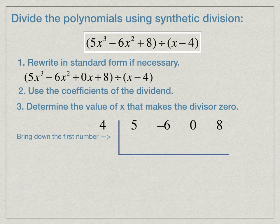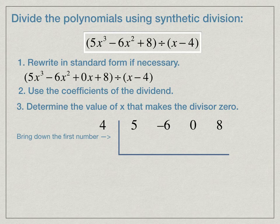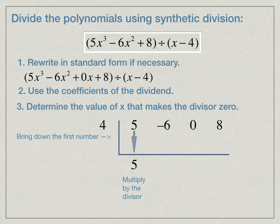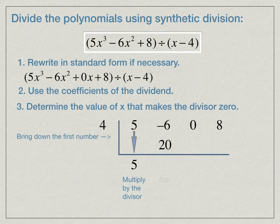The steps are pretty straightforward. We bring down the first number, and from there, we multiply that by the divisor. We get 20. We add these two numbers together and get 14.